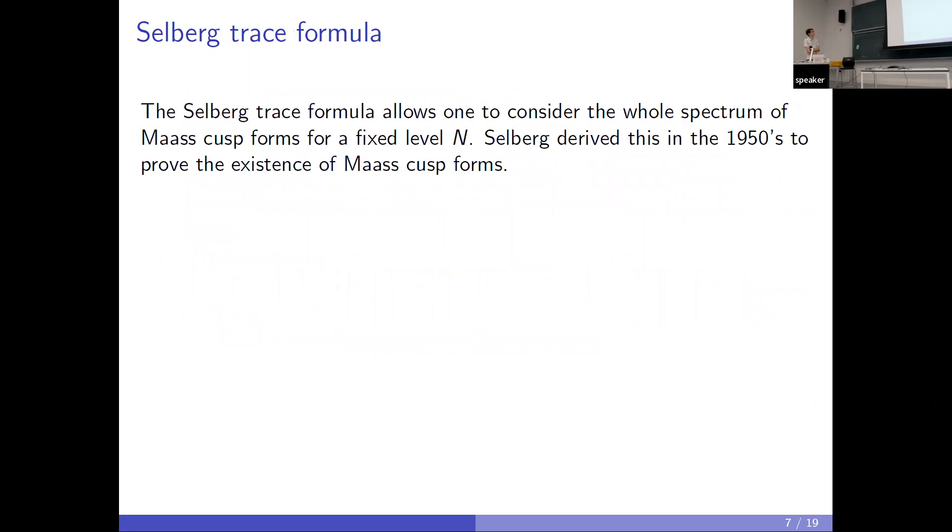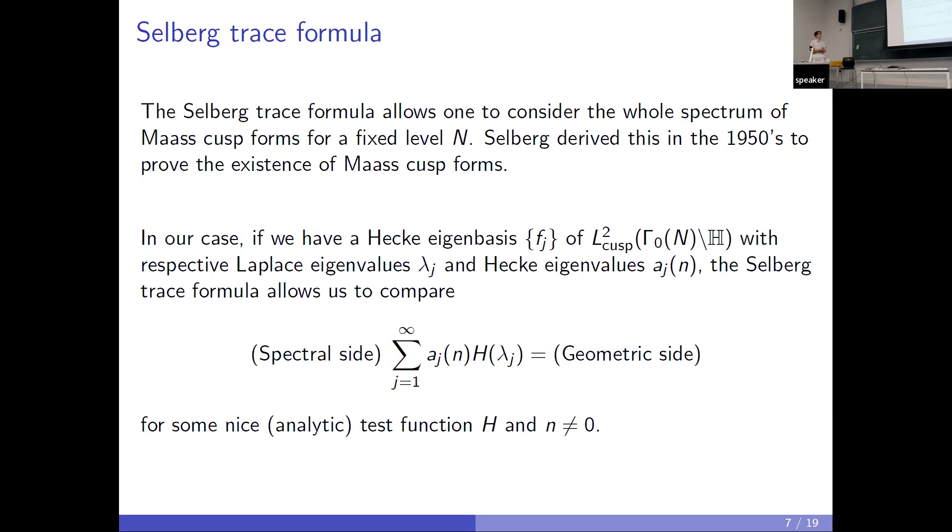So what is the Selberg trace formula? The Selberg trace formula allows you to consider all the Maass forms at once for a fixed level. It was derived in the 1950s to prove the existence of Maass cusp forms. Suppose you have this f_j eigenbasis with Laplacian eigenvalues. You essentially can compute this spectral side on the left hand side, which is a sum over all of them with some nice test function. This right hand side is the geometric side, which is known, which you can compute, and has lots of stuff which is very nice and explicit.